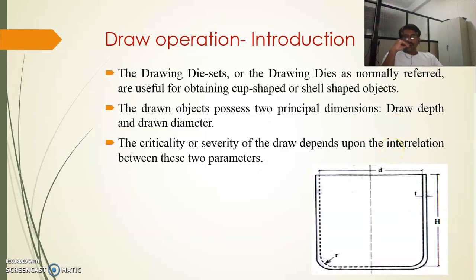The draw operation introduction: drawing operation means drawing curved-type shapes from sheet metal. The figure will show you the curved type of shape which we can draw from the sheet metal. A simple application that we all know is automobile door panels. The drawing operation from the sheet metal is carried out with the help of drawing die sets, which are required for the press operations.